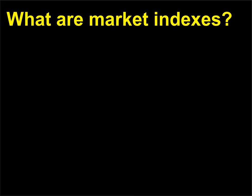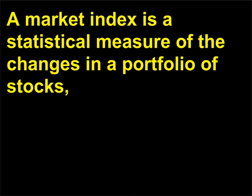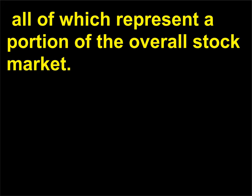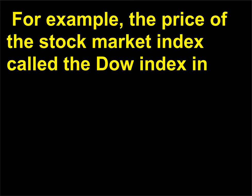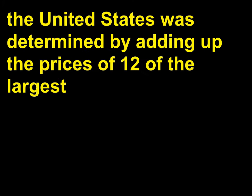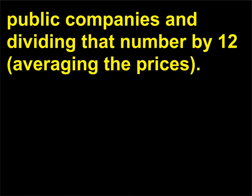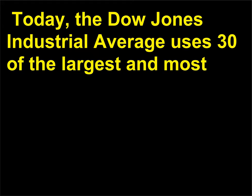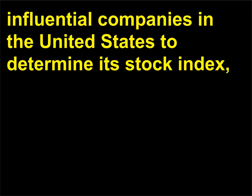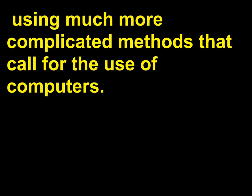What are market indexes? A market index is a statistical measure of the changes in a portfolio of stocks, all of which represent a portion of the overall stock market. For example, the price of the stock market index called the Dow index in the United States was determined by adding up the prices of 12 of the largest public companies and dividing that number by 12, averaging the prices. Today, the Dow Jones Industrial Average uses 30 of the largest and most influential companies in the United States to determine its stock index, using much more complicated methods that call for the use of computers.